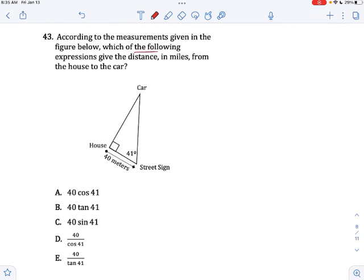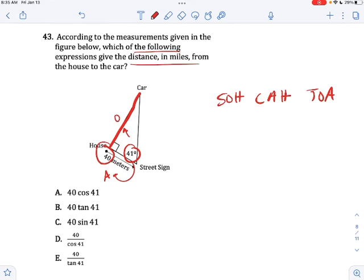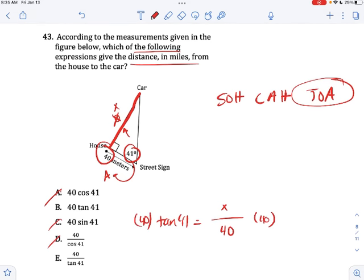According to the measurements given in the figure below, which of the following expressions gives the distance in miles from the house to the car? So for this distance, relative to these values and knowing that this is a right triangle, just remember SOH CAH TOA and then relative to your angle, look at which sides you're looking for. You're looking for the opposite side and you're looking for the adjacent side. These are the two known values, so opposite, adjacent. Clearly we have to use a tan ratio, so cancel out these answer options and then plug it in. So tan 41 is equal to opposite, which I'll just call x, x over 40. So you know that if you want to solve for x, multiply both sides by 40 and you end up getting 40 tan 41.